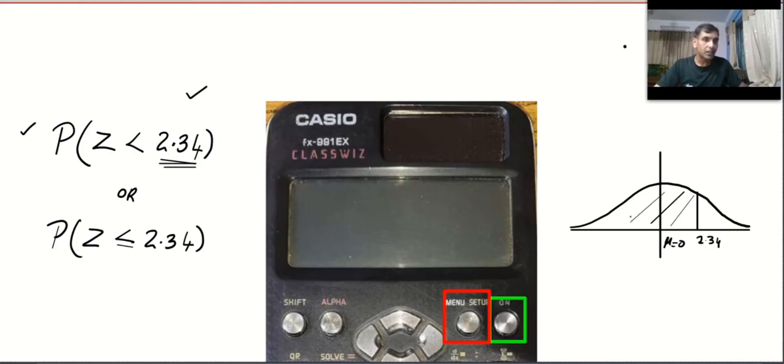So this is the required area value. Don't forget probability value means area value, and there's approximately no difference between less than and less than equal to because we are considering infinite number of values over here.